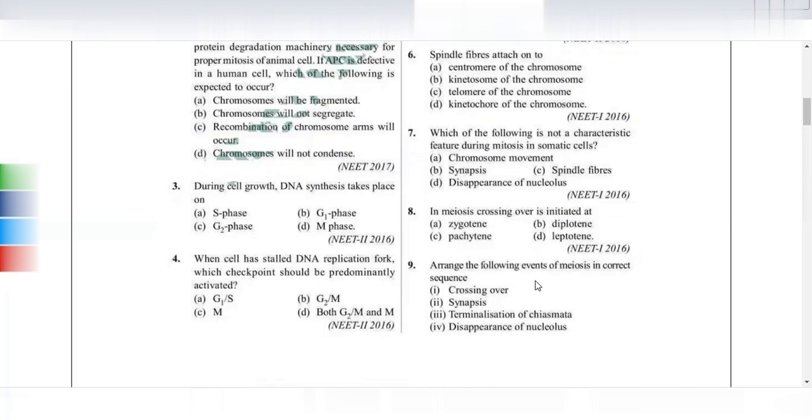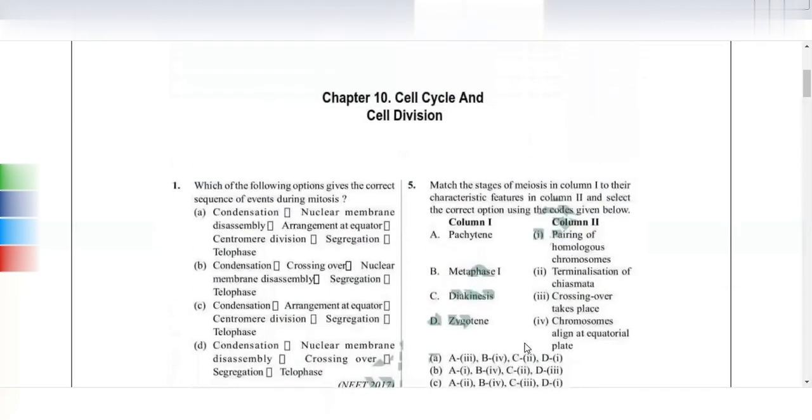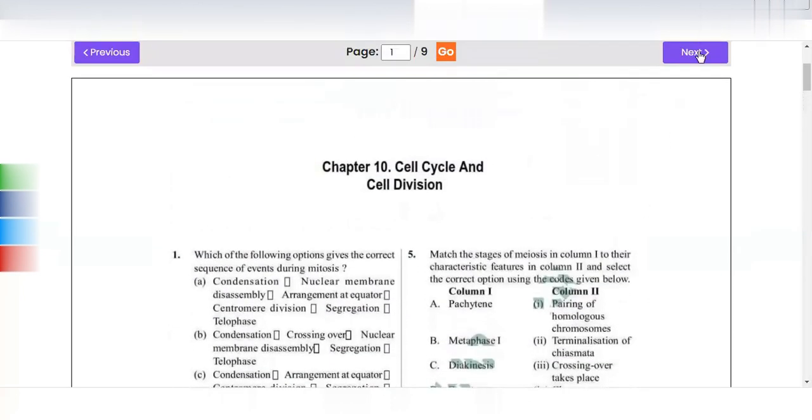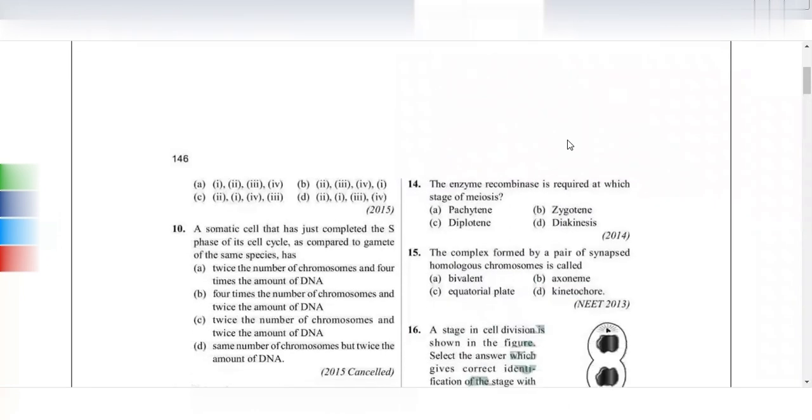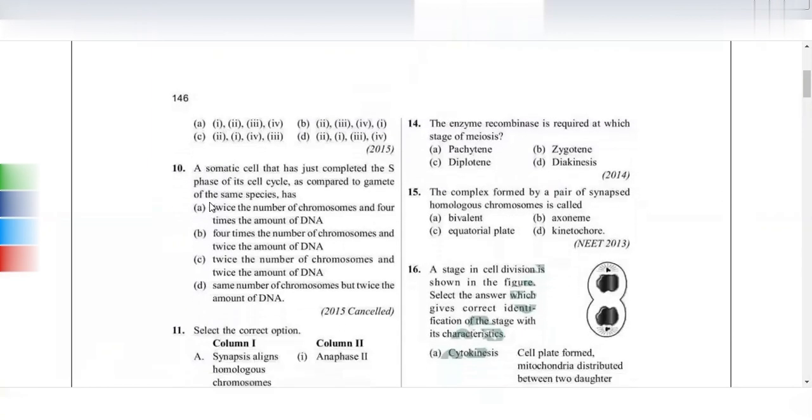Arrange the following events of meiosis in correct sequence. First we have synapses, then crossing over, terminalization of chiasmata, and then nuclear membrane disappears. The sequence is 2, 1, 4, 3. Option C is correct.